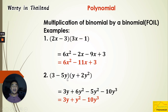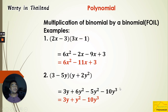Number two: (3 minus 5y) times (y + 2y²). First: 3 times y gives 3y. Outer: 3 times 2y² gives 6y². Inner: negative 5y times y gives negative 5y². Last: negative 5y times 2y² gives negative 10y³. Now we check for like terms: 6y² minus 5y² gives y². Therefore, the product is 3y plus y² minus 10y³.